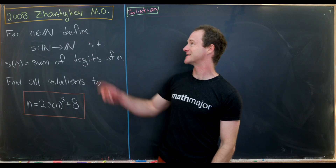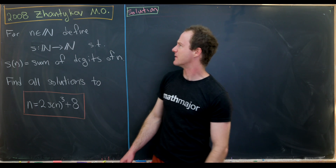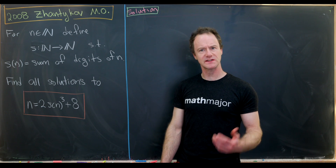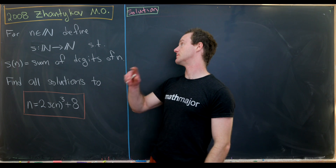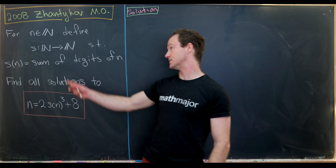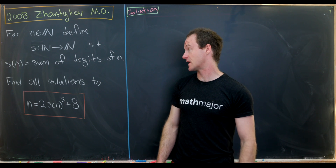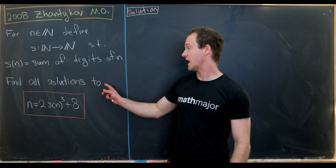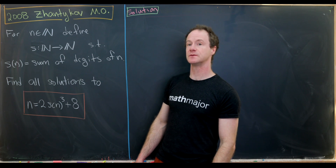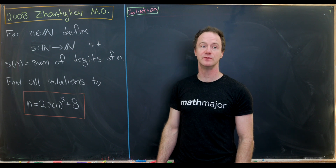This problem is from a 2008 mathematical Olympiad from Kazakhstan — I think the name is Zantikov, but I'm not really sure. Let's look at the careful statement: for natural numbers n, we define the sum of digits function s. It takes in a number and spits out the sum of its digits. Our goal is to find all solutions to the cubic equation n = 2·s(n)³ + 8.